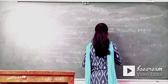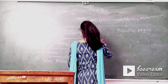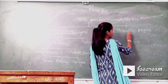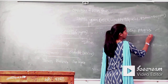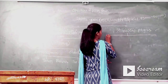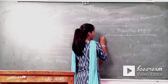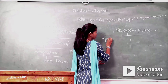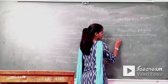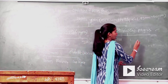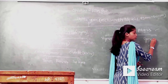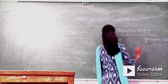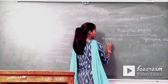Now we will see the next part of pollen grain, that is microspore proper. This microspore proper is constituted of two parts: vegetative cell and generative cell. The vegetative cell is also known as tube cell.